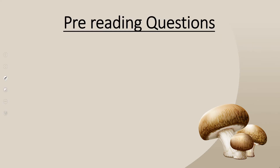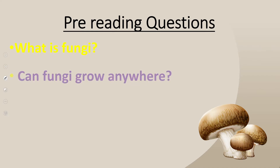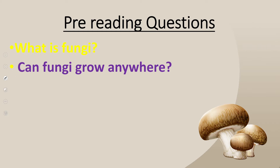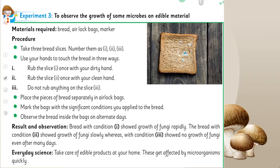Pre-reading question: What is fungi? It is a heterotroph; it could be multicellular or unicellular; it is a microorganism. Can fungi grow anywhere? They usually grow in warm places. Now here is your experiment — Experiment Number Three. Quickly open it in your Science 5 books, chapter number two.